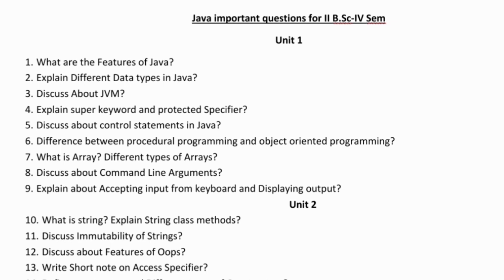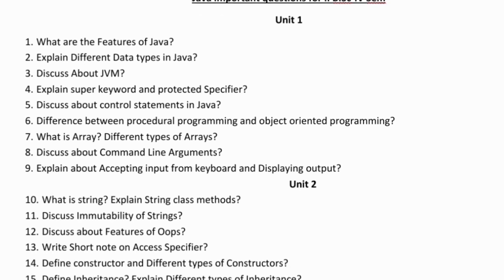In the first unit, the important questions are: what are the features of Java? The features are simple, small, secure, robust, platform independent, multi-threaded, compiled, and interpreted. Next, explain the different data types in Java: integer, character, float, and double.